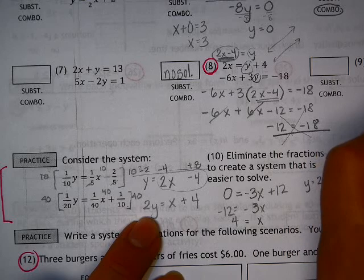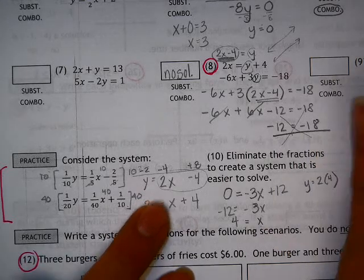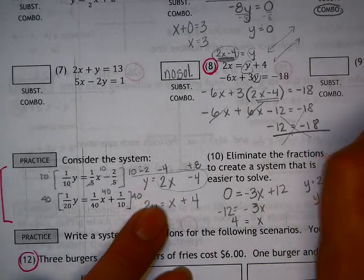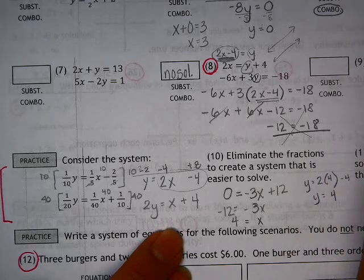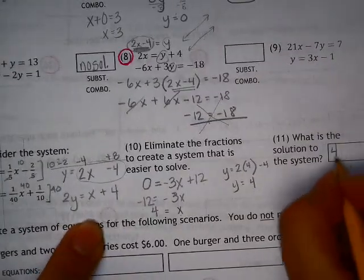So y is equal to 2 times 4. x is 4. Minus 4. Wow. y is equal to 4 as well. So the solution to this system happens to be 4 comma 4.